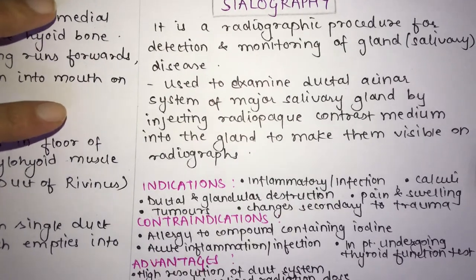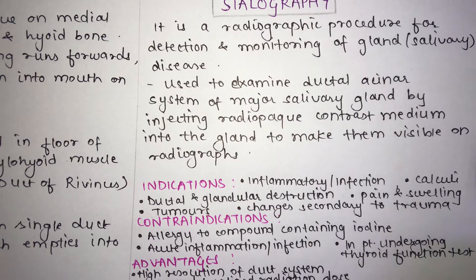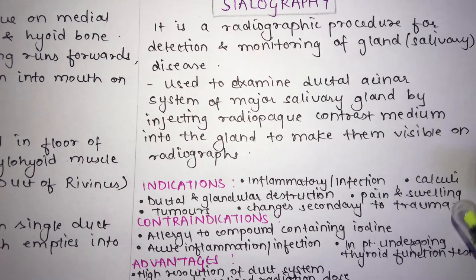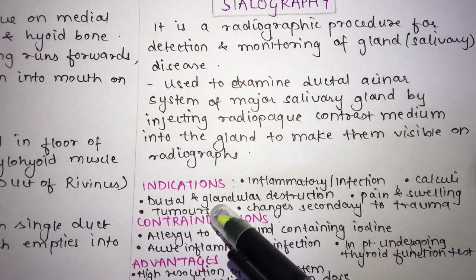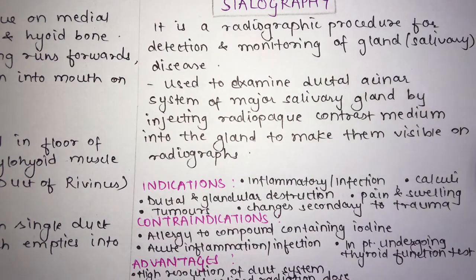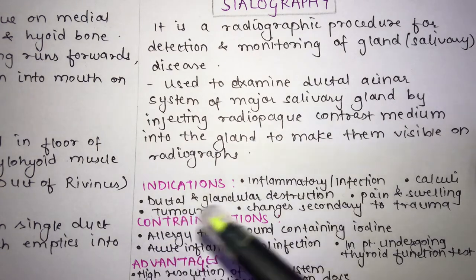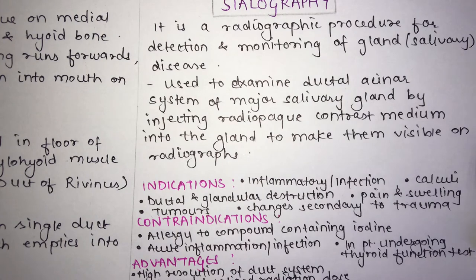The indications for sialography include: inflammation or infection of the salivary gland; calculi (stones), known as sialolithiasis, to determine their presence or position; ductal and glandular destruction due to obstruction or strictures; pain and swelling of the salivary gland; tumors; and changes secondary to trauma.